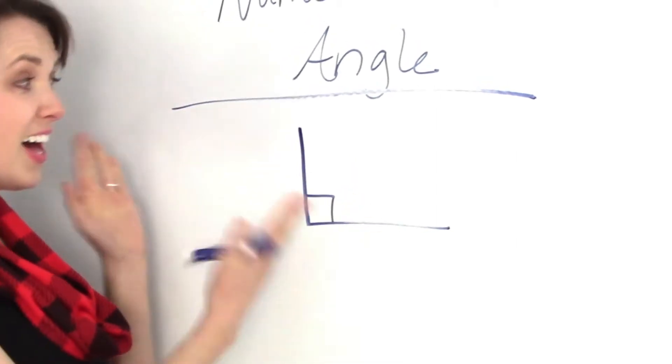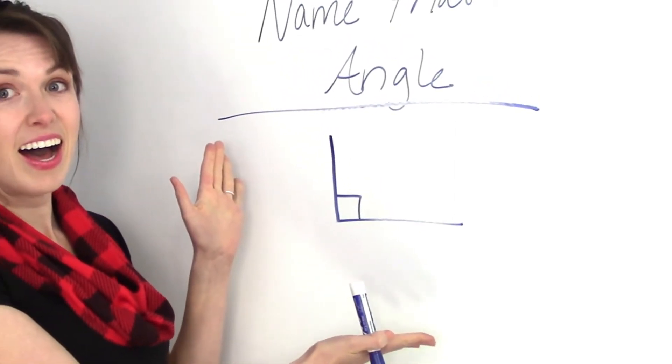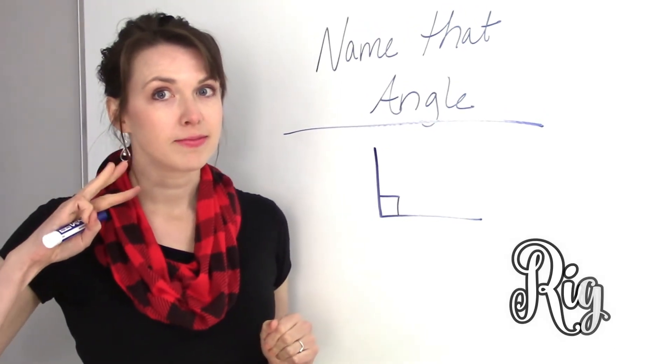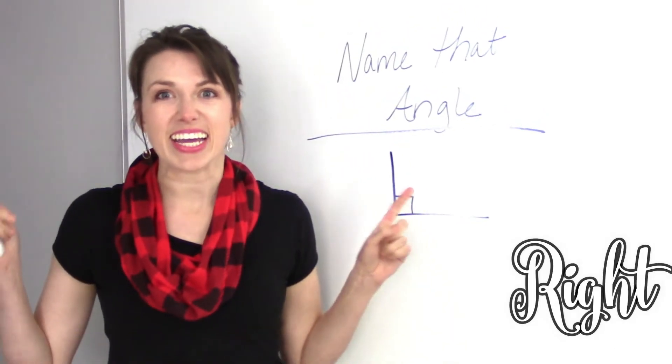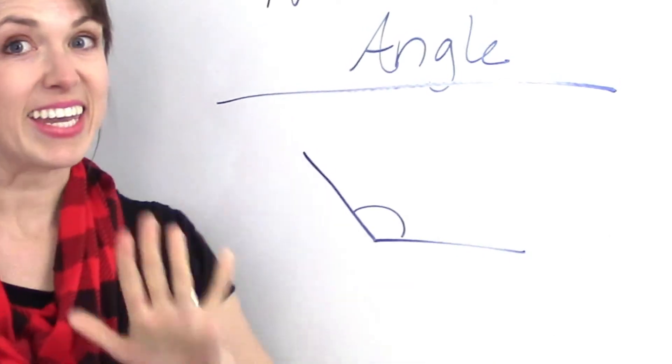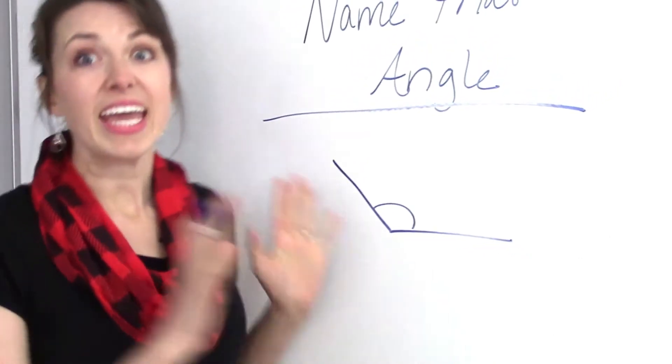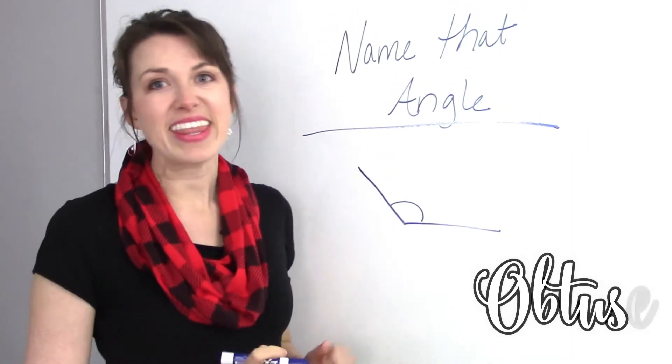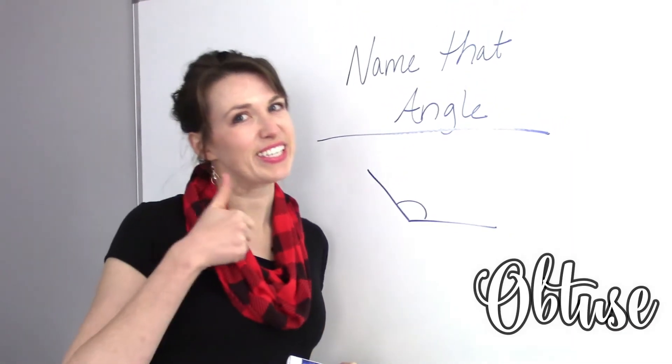First angle. Is it right, acute, or obtuse? You're right, it's right. Next angle. It is obtuse because it is greater than 90 degrees. Good job.